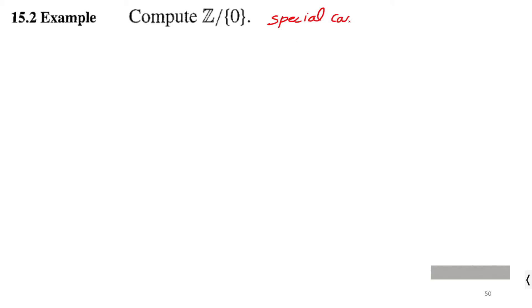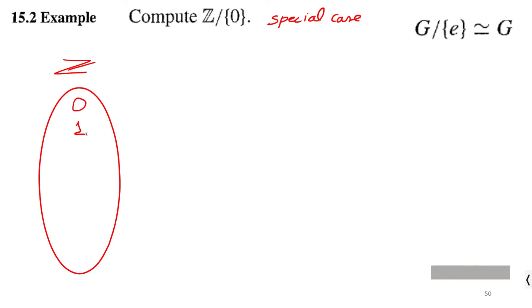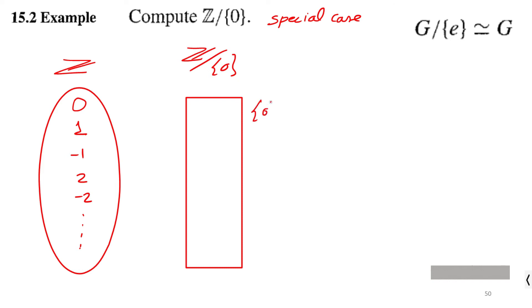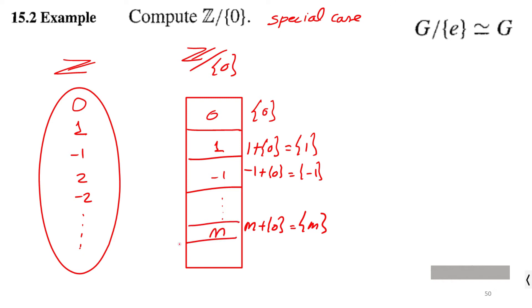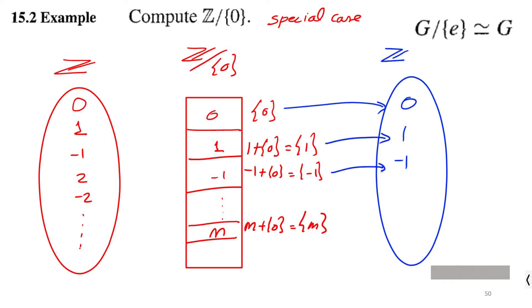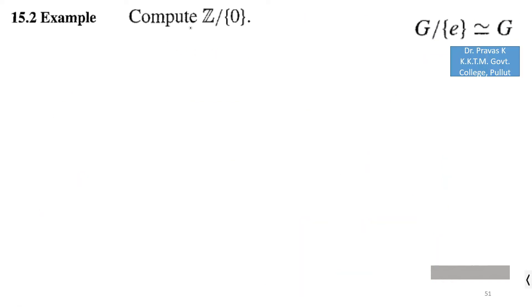Next we consider Z over {0}, which is a special case of a group over its trivial subgroup, and it is isomorphic to G. Here Z is the group of all integers under addition. Since {0} contains only one element, all cosets contain exactly one element — the coset containing integer m contains only m. So it is possible to find an isomorphism from this factor group to the integers, and Z over {0} is isomorphic to Z.